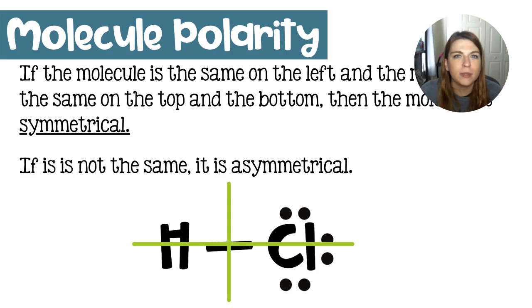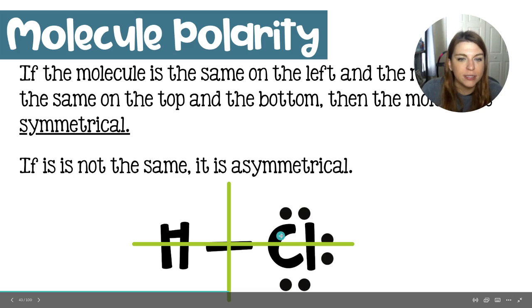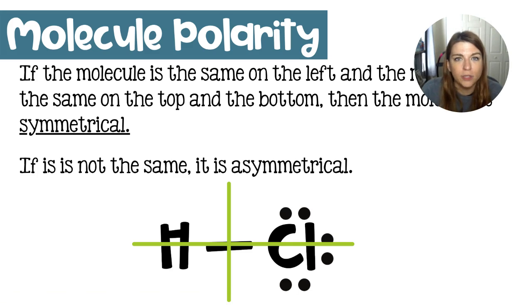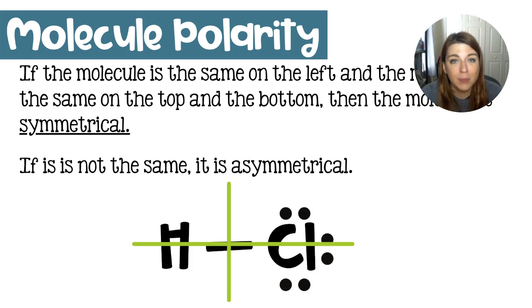Looking at this, you should be able to determine that this is a polar bond. We have hydrogen bonded to chlorine, and that chlorine is going to snatch up the shared electrons. Not only that, but chlorine has a bunch of electrons on it already, indicating that this is a very negative end of this bond. This bond is also a molecule — it's a molecule just made of two atoms. So in this case, not only do we have a polar bond, but we also have a polar molecule. Chlorine is hogging all of the electrons and forms a really negative end on this molecule.